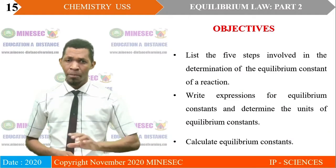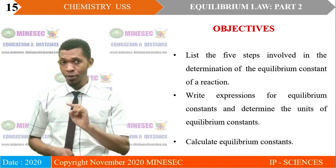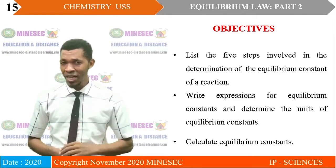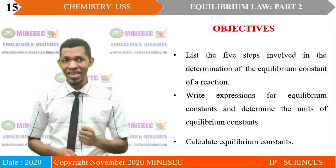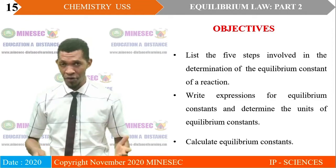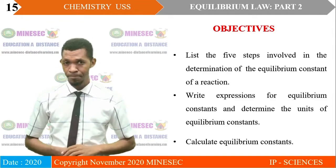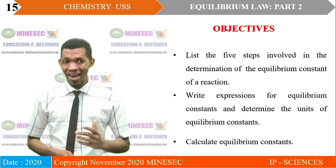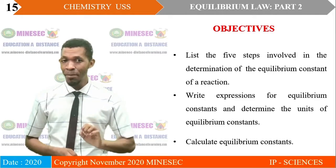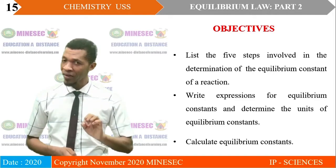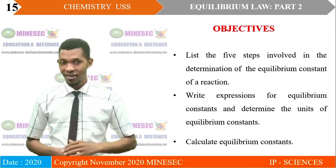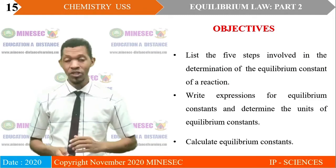By the end of this lesson, you should be able to: list the five steps involved in the determination of the equilibrium constant of a reaction; write expressions for the equilibrium constant and determine its unit; and calculate the equilibrium constant.